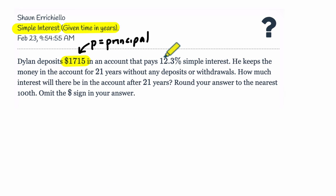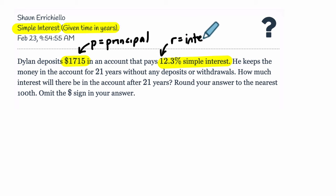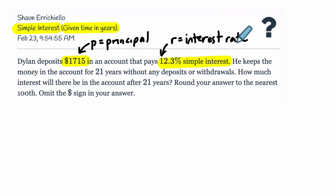It pays 12.3% simple interest — that's pretty high. This interest rate is the amount of interest that we gain on the principal each year. It's a rate per year, and that's standard. If you see simple interest, you can assume it's per year unless noted otherwise. So at the end of a year, you'll have acquired a total of 12.3% interest on that principal amount.